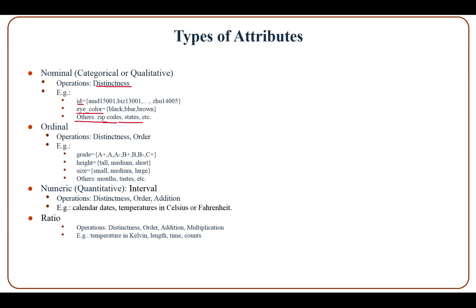With ordinal attribute type, the operations can be distinctness and order. For example, grades are a set of A+, A, A-, B+, B, B-, C+... — you can compare two grades to see if one is greater than, less than, the same as, or different from the other. Another example is height, where tall has higher order than medium, and medium has higher order than short.